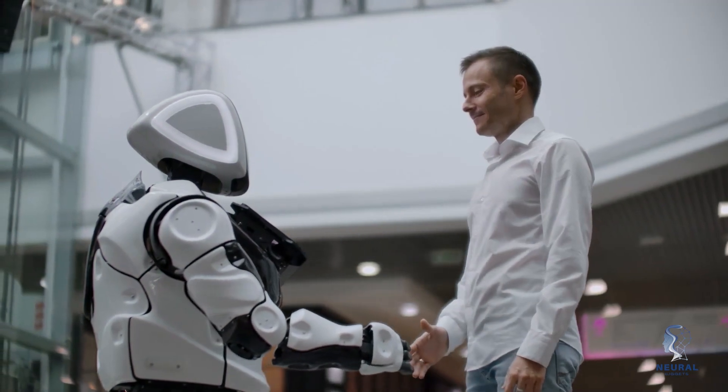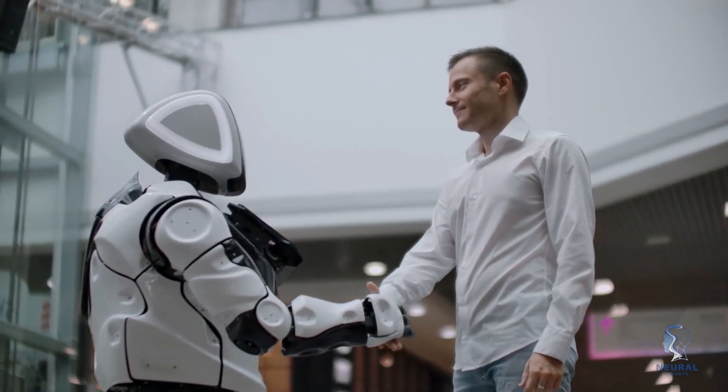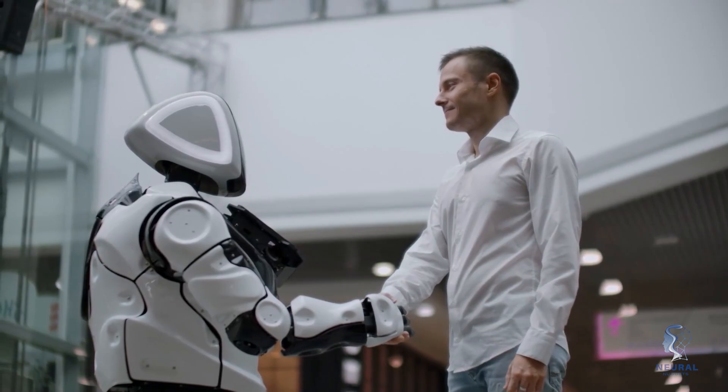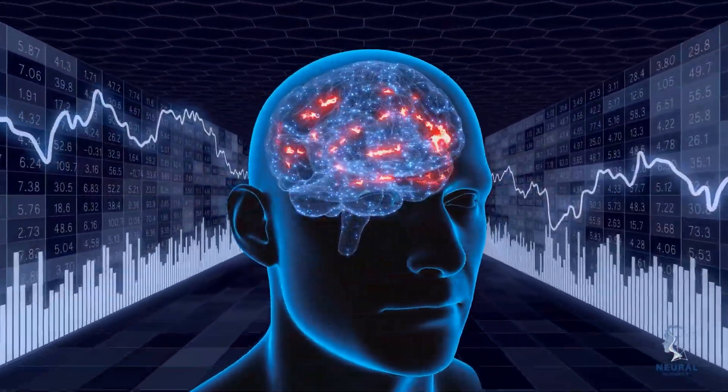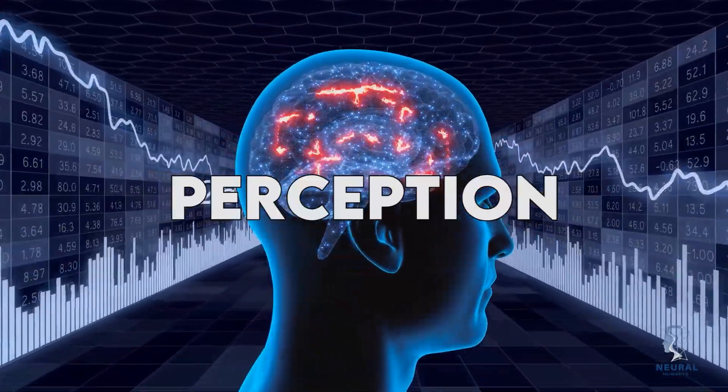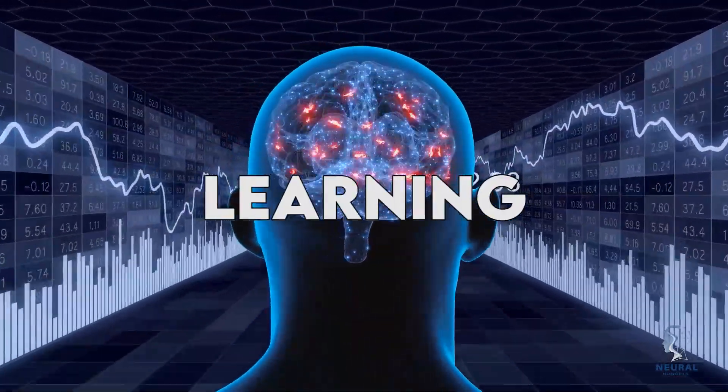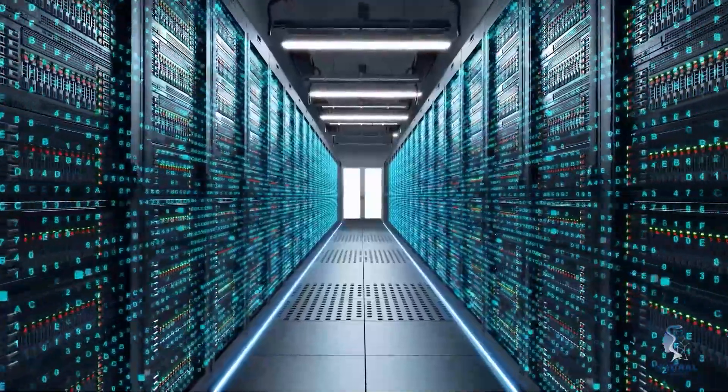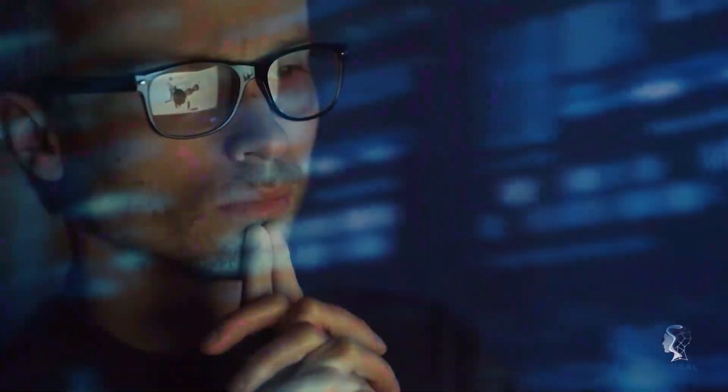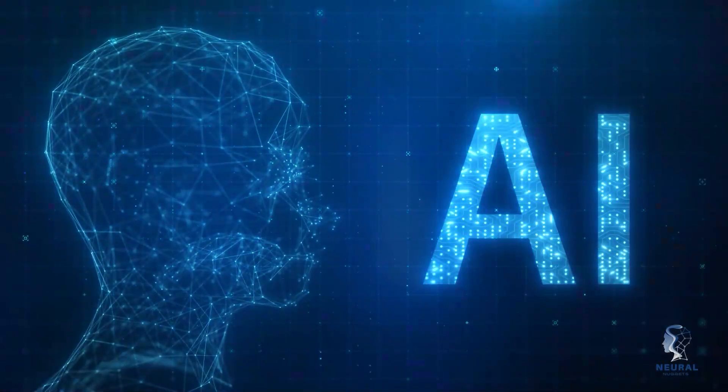So what exactly is AI? At its core, AI is a field of computer science that aims to create intelligent machines that can perform tasks that typically require human intelligence, such as perception, reasoning, and learning. These machines can process vast amounts of data, learn from that data, and make decisions based on that learning.